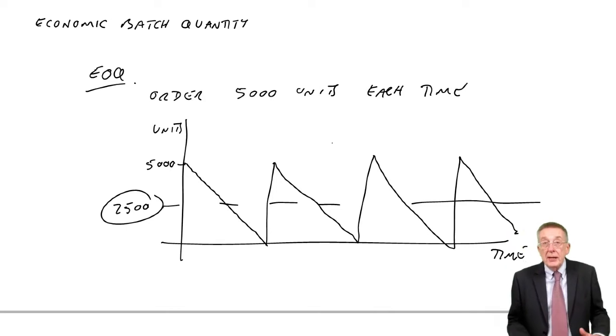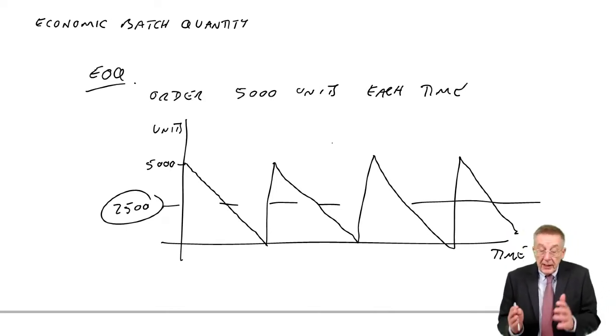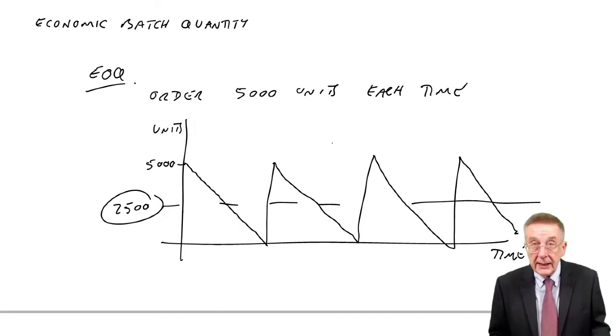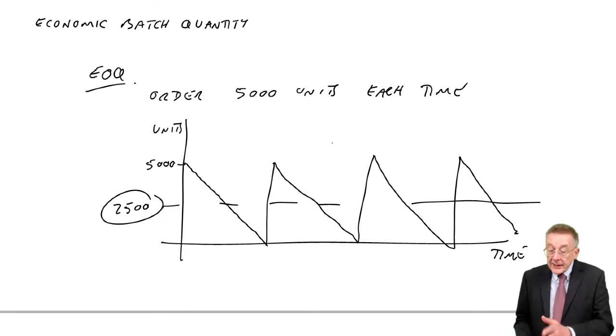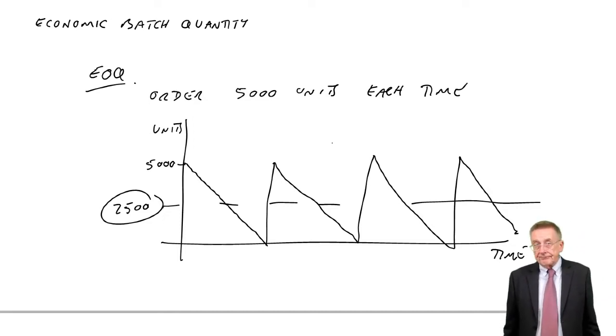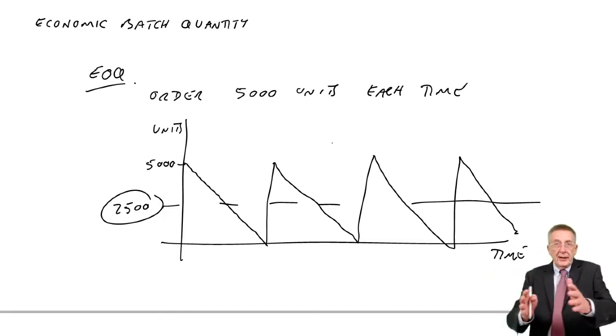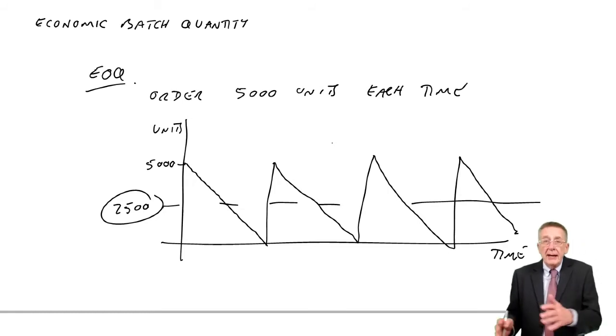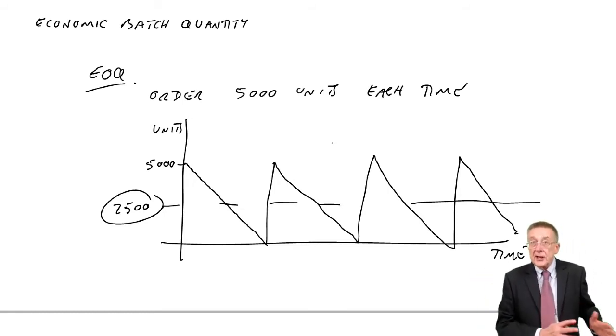And although proving the EOQ formula isn't in the syllabus, part of the proof does always assume that the average inventory would be half of the order quantity. But that's what we're ordering from a supplier. We're ordering 5,000 perhaps every month, and every month exactly 5,000 suddenly arrive.